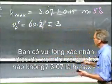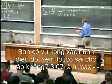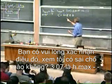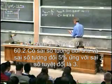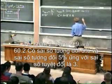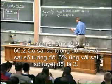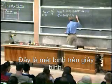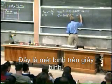Would you please confirm that I didn't make a mistake? 3.07 is H max. I multiply it by 2, by 9.8 — that is 60.2. That's a 5% error, and a 5% error is indeed 3. This is meters squared per second squared.